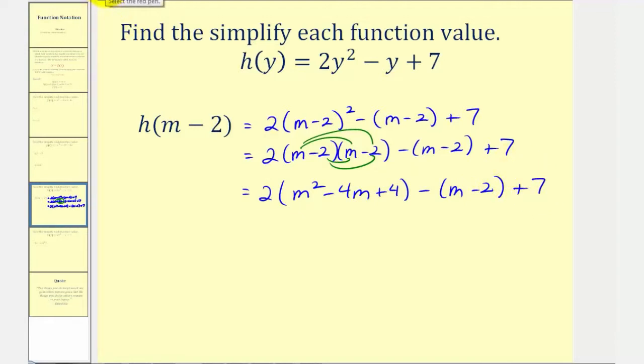Now we'll clear the parentheses. Here we'll distribute 2. And because of the minus sign here, we can think of distributing a negative 1. So we would have 2m squared minus 8m plus 8, and then we'd have minus m plus 2, and plus 7.